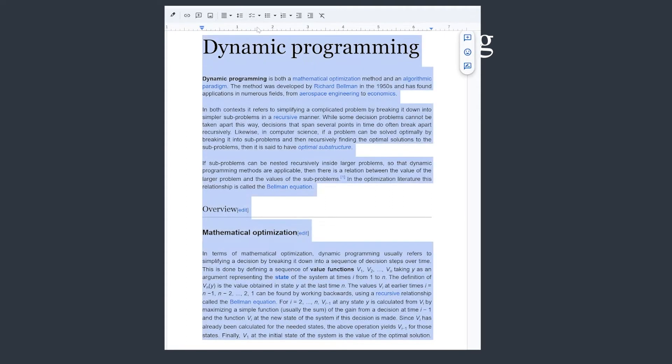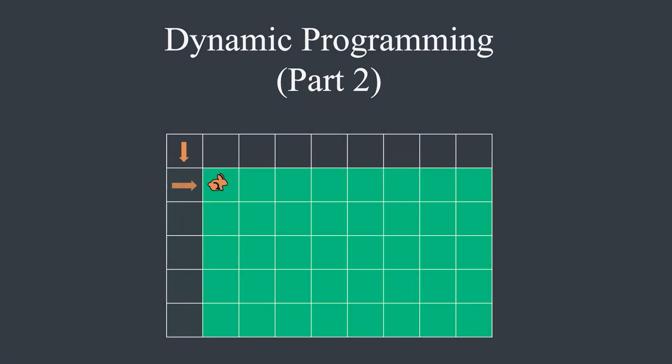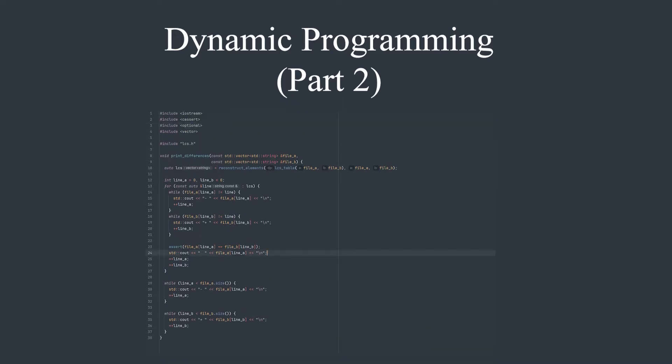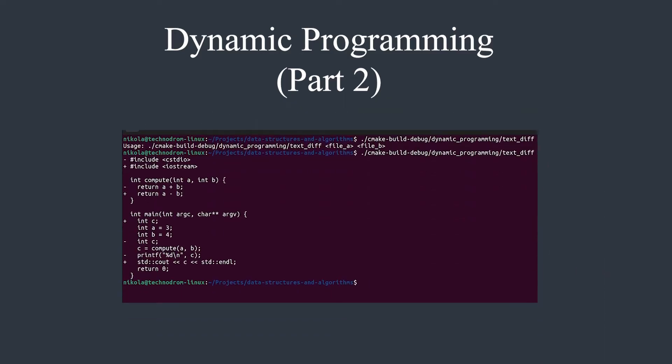We will also see how to find the full solution path, not just the optimal number like in part one. Today we will talk about the longest common subsequence and we will explore the text alignment problem in the next one. By the end of this video, we will write a program that reads two text files and prints the diff between them. Let's get started.